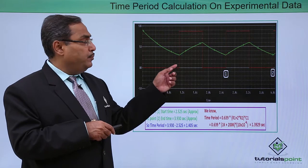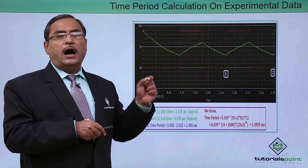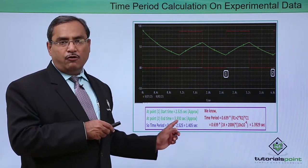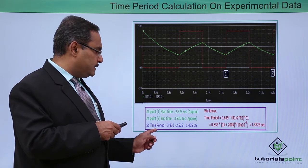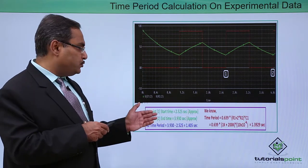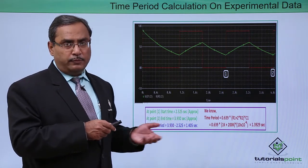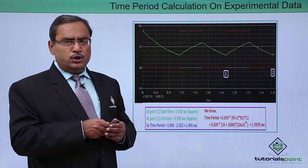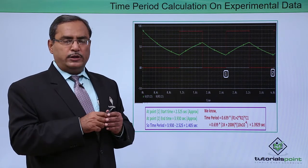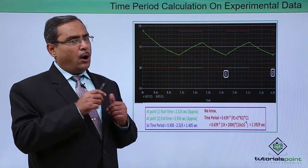In this simulation output from PSPICE, we performed the respective calculations by substituting RA, RB, and C values into the expressions. From the graph we obtained a value of 1.3929 seconds, and the theoretical value is 1.450 seconds. This comparative study shows how well the practical simulation value matches the theoretical value. Now let us go for the practical demonstration using PSPICE software.